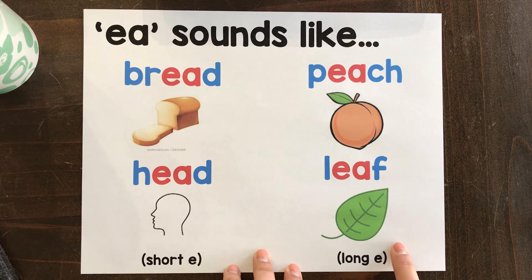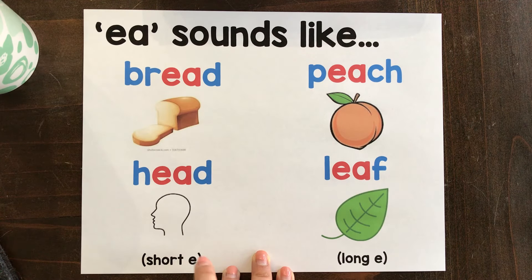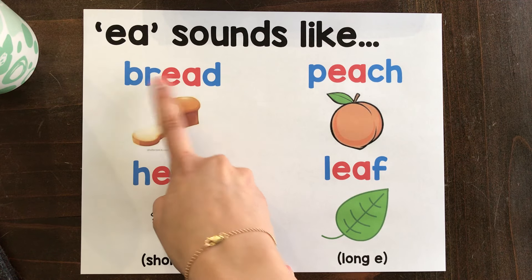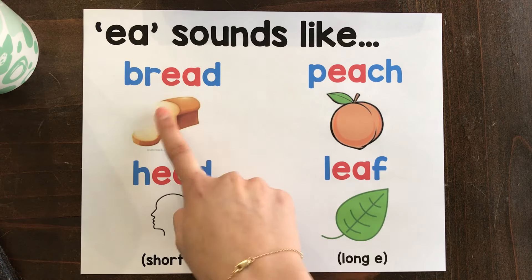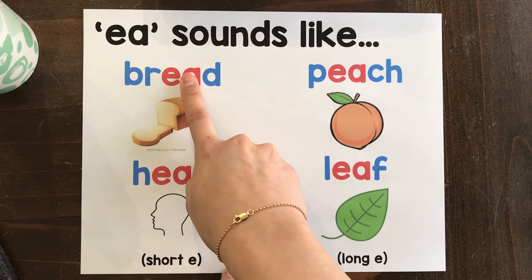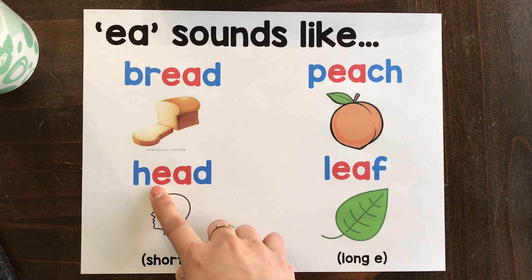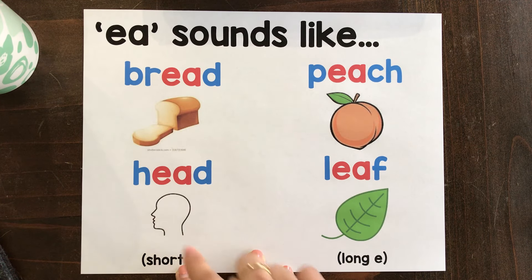But this EA is tricky because instead of making the sound that says its name, it will also make the 'eh' sound — the short E sound — like bread. It still doesn't sound like that A is in there. So either way the A is kind of sleeping; she's not going to make her sound. H-E-D: head. So here it's making that short E sound.